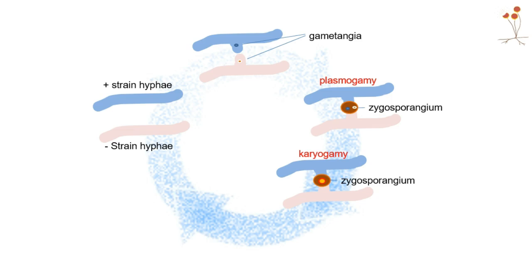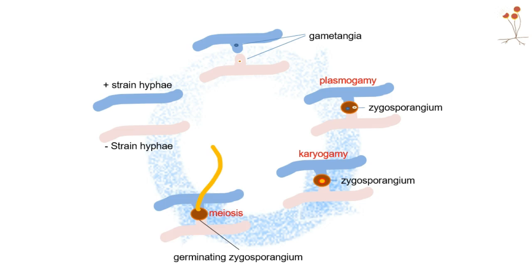Within that zygosporangium, the cells may stay dormant for a while, but it will develop a thick wall with a knobby texture. Over time, that diploid nucleus will undergo a couple of rounds of meiosis to rearrange the parent chromosomes it acquired. Eventually the thick coat will break down, and a zygospore will form. That zygospore germinates into a haploid coenocytic hyphae, which, just as before, can specialize to form a sporangiophore, grow a sporangium complete with sporangiospores, and the whole cycle starts all over again with asexual reproduction.